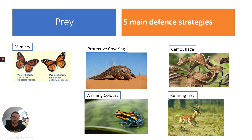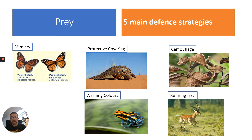Finally, running fast — the ability to outrun predators. This is an impala. Impalas can run extremely fast, and more importantly they can sustain that speed for a prolonged period. They're also very agile, so they can dodge out of the way. You can see this impala has large horns as well, which will help protect it from being predated upon.